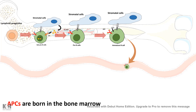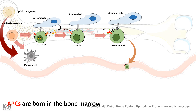Dendritic cells can be derived from the lymphoid progenitor, but nowadays there is a debate that myeloid progenitors can also give rise to dendritic cells.